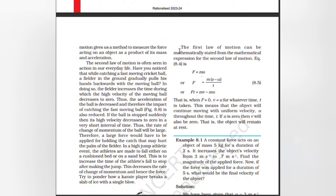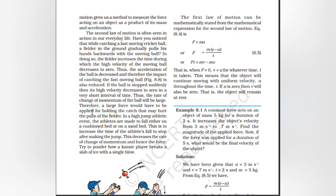The second law of motion gives a method to measure the force acting on an object as a product of its mass and acceleration. The second law of motion is often seen in action in everyday life. Have you noticed that while catching a fast-moving cricket ball, a fielder gradually pulls his hands backwards with the moving ball? In doing so, the fielder increases the time during which the high velocity of the moving ball decreases to zero. Thus the acceleration of the ball is decreased and the impact of catching is reduced. If the ball is stopped suddenly, its high velocity decreases to zero in a very short time — the rate of change of momentum is large, so a large force would have to be applied, which may hurt the palm. In a high jump athletic event, athletes are made to fall on a cushioned bed or sand bed to increase the time of fall, decreasing the rate of change of momentum and hence the force.